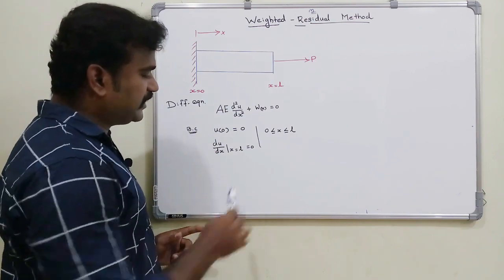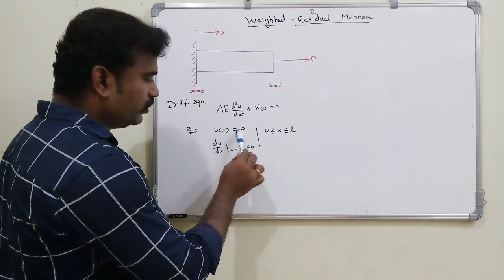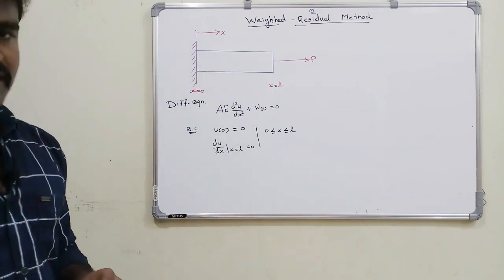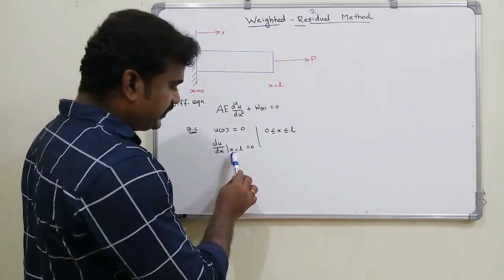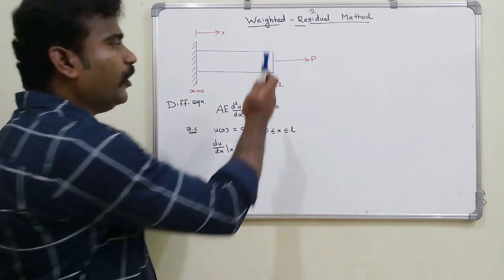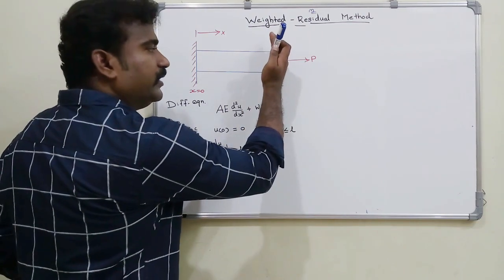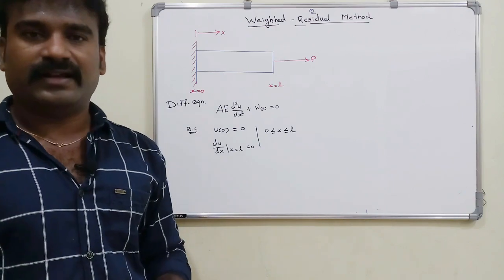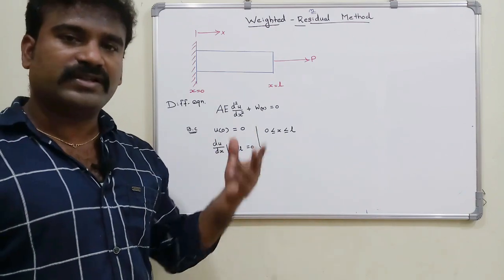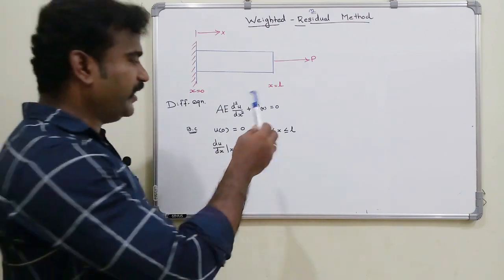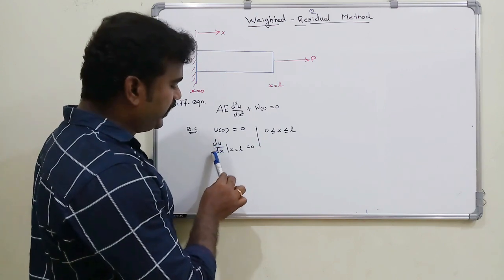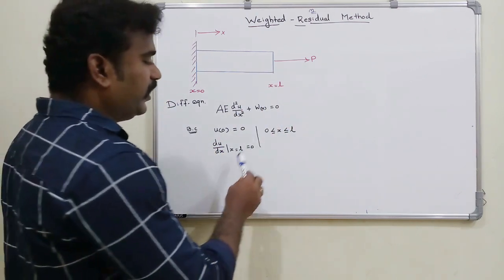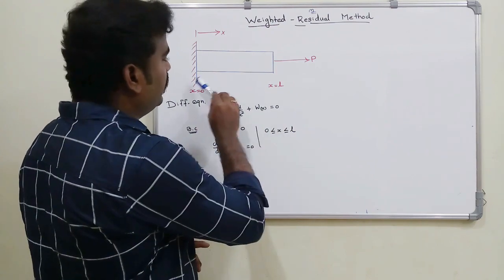The boundary conditions are: at x = 0, u(0) = 0 (fixed end). At x = L, in the outermost layer there is stress and strain, so du/dx = 0. These are the boundary conditions over the domain 0 to L.